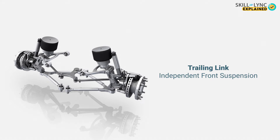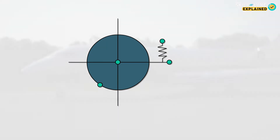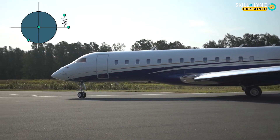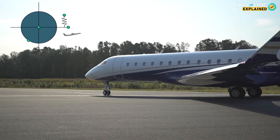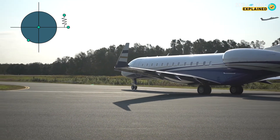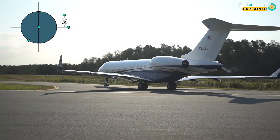The fifth type is the trailing link independent front suspension. Here, one end of the coil spring is attached to a trailing arm and the other end to a shaft which is pivoted through the trailing arm. The wheel hub is connected to the end of this shaft, so when the wheels move up and down, it tends to wind and unwind the coil springs. Sometimes these coil springs are replaced with torsion bars.